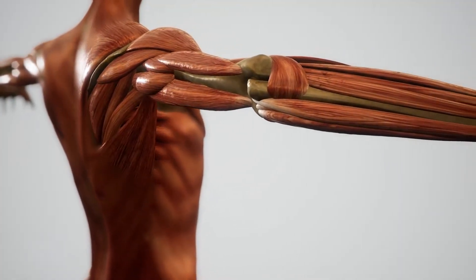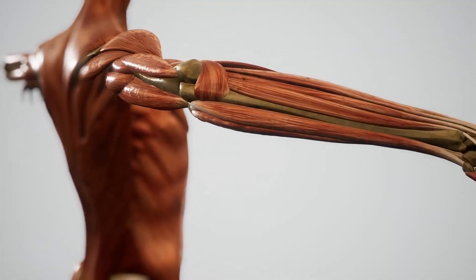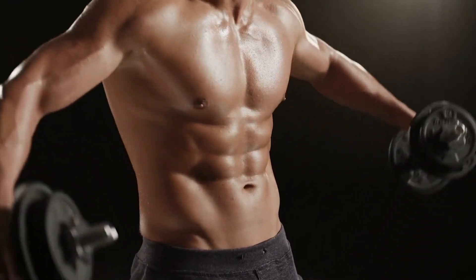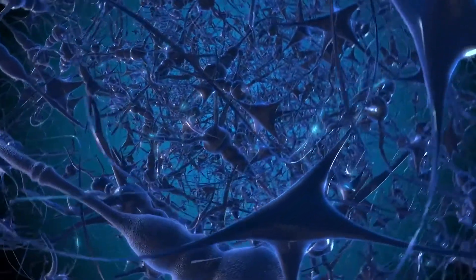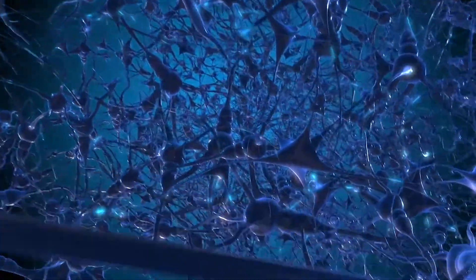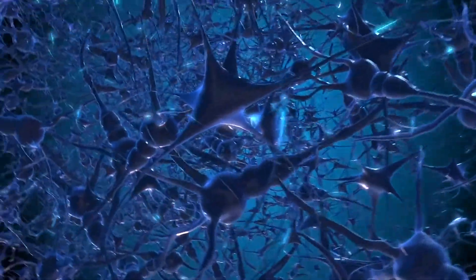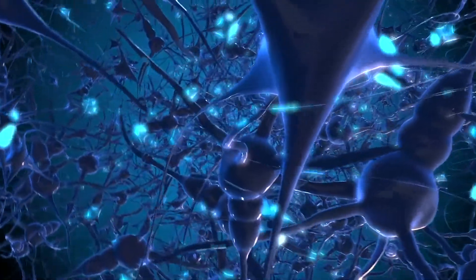The nervous system works with other systems like the muscular system to coordinate the necessary functions to achieve a desired outcome. Messages are sent and received via a network of neurons, enabling the body to adapt to situations in the immediate environment.